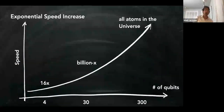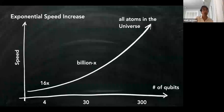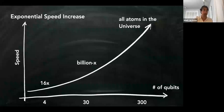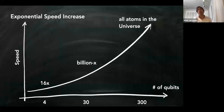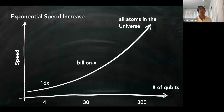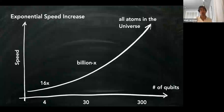Just having one qubit means you can consider a one and a zero at the same time. But the real power of quantum computing is that every time you add one qubit, you double the number of configurations you can have simultaneously. Two qubits gives you four things at once, four qubits gives you 16, and 30 qubits gives you a billion at once. By the time you reach 300 qubits, this is equivalent to the number of configurations given by all atoms in the universe. That's why people are so excited — quantum computing gets exponentially more powerful as you increase the number of qubits linearly.